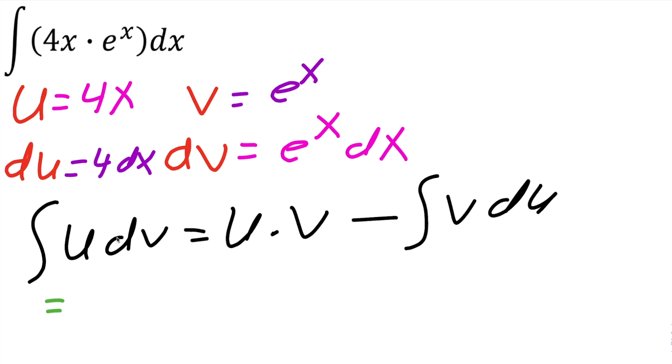And so we're going to get u is 4x, v is e raised to x, minus the integral of v, which is e raised to x, du, which is 4dx.